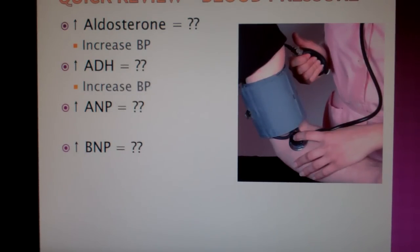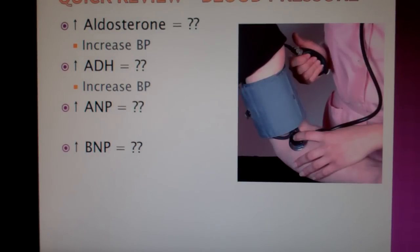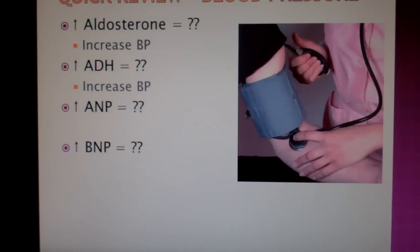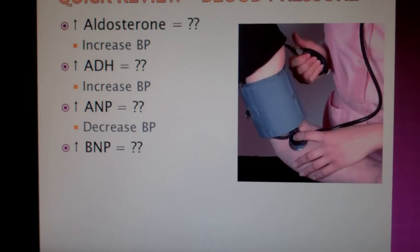Increased ADH does the same thing, except now we're not actually increasing sodium in the blood — we're just straight out increasing water retention. What about increased ANP and BNP? Remember, they're the opposites of aldosterone, so they're going to decrease your blood pressure.